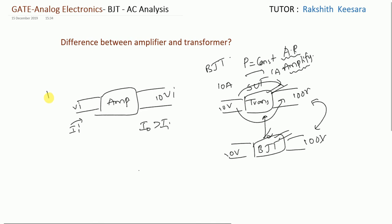So indirectly I can tell that if I consider power input, it is VI into II. If I consider power output, it is 10VI - I0 is more than II. Let me take 2I0, 2II. I0 is 2II, so it is 20VII. In amplifier, power is not constant, it is amplifying the power also.